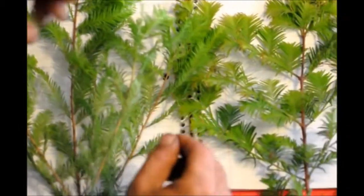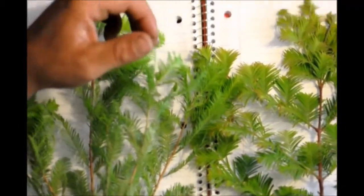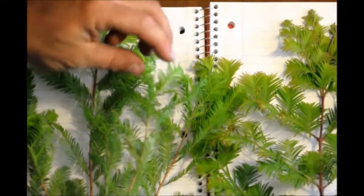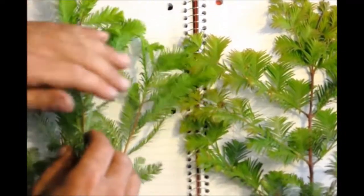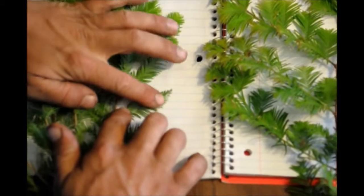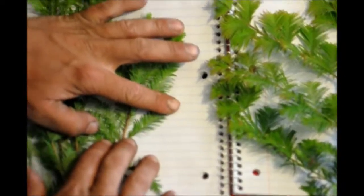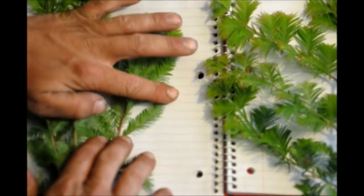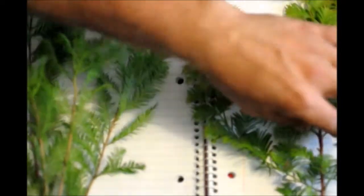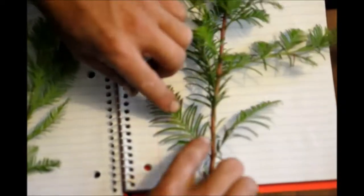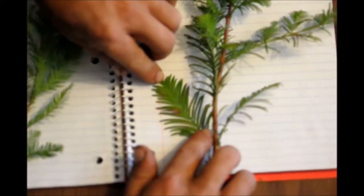Another way we can take a look at this opposite versus alternate leaf style is when we look at just one leaf. The leaflets on that one leaf are arranged alternately on the bald cypress, and the leaflets on the dawn redwood are arranged opposite.